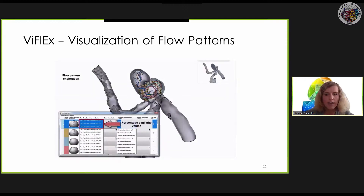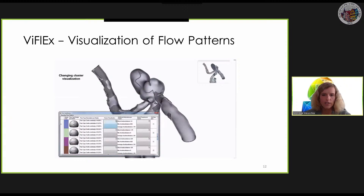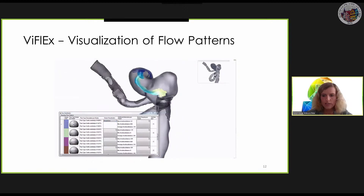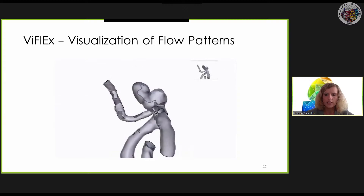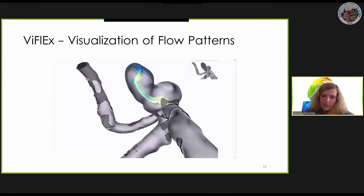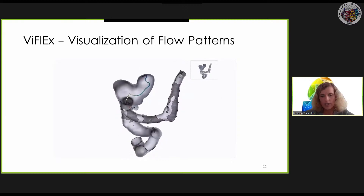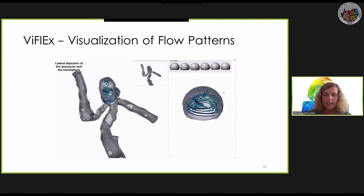Here we see the VFLEX module applied to an aneurysm data set. The classification results are summarized in a table listing the three most similar flow types for each cluster. In total we distinguish six flow types. There are three visualization options provided for each cluster: the representative line, a hull geometry, and the lines themselves. In addition, a scalar field can be color-coded, such as the distance to the vessel wall. There is also a checkbox that can be used to include new flow types for further classifications. The user can select individual clusters in 3D to explore them more precisely, and the 3D aneurysm view can be linked to the hemisphere for an easier selection of groups of similar flow types.